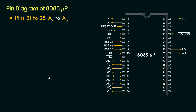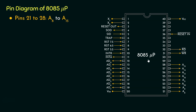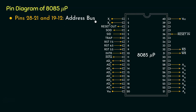Now let's begin with the pins for today. We are going to learn about pins 21 to 28, which are named A8 to A15. These are unidirectional pins. The 8085 microprocessor has a 16-bit address bus. Therefore, pins 28 to 21, along with pins 19 to 12, together comprise the address bus of the 8085 microprocessor.